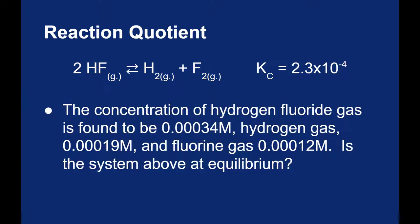And I'm going to get right into an example to show you how it works. We have hydrogen fluoride decomposing to make hydrogen and fluorine gas, and you're given an equilibrium constant in terms of concentration. During this reaction, the concentrations of the three gases are measured, and the question is, is the system at equilibrium?